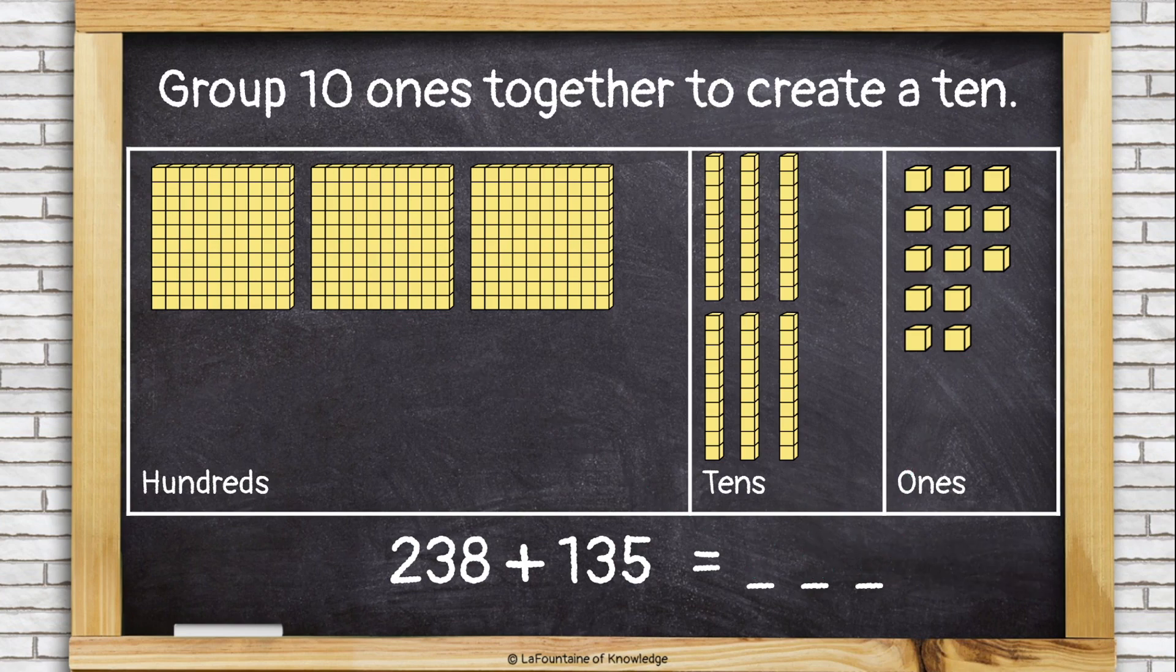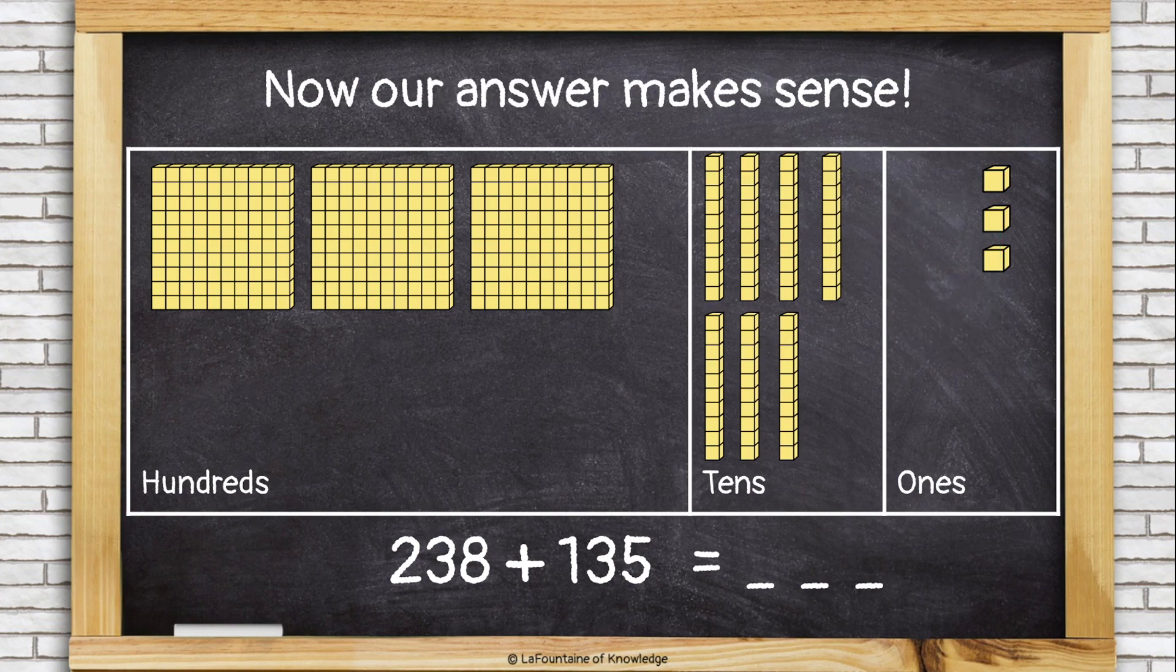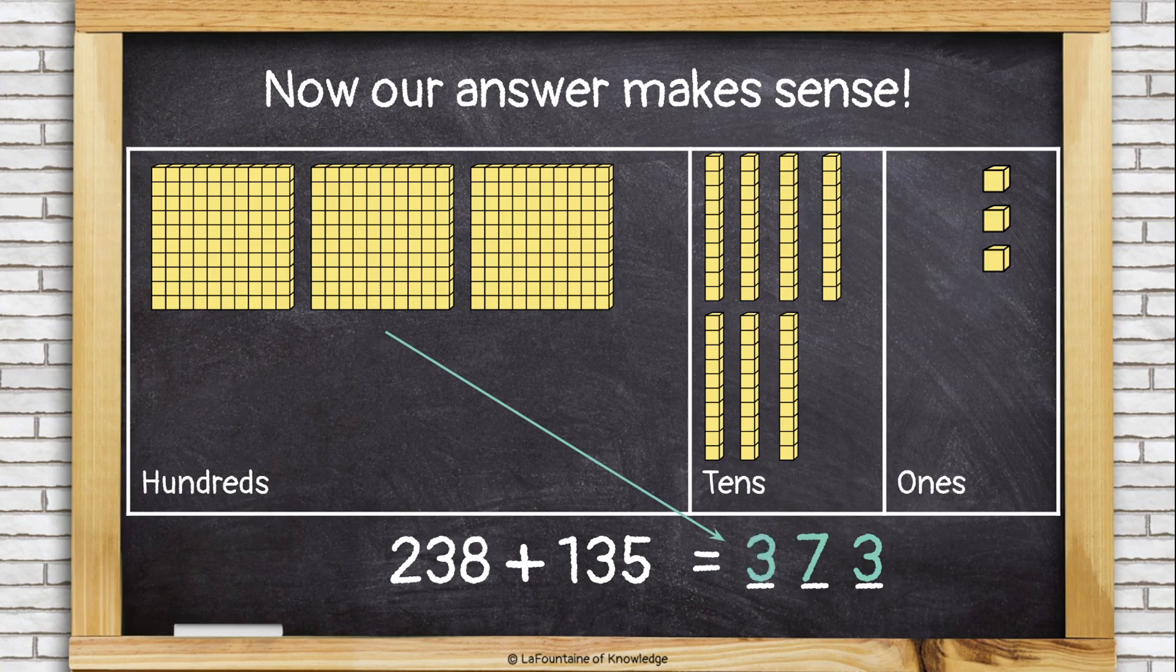I'm going to need to regroup here. I can group 10 of these ones together to create another 10. That's actually a group of 10. Now, let's see what our answer would be. Now I have 3 ones, 7 tens, and 300. Now our answer makes sense.